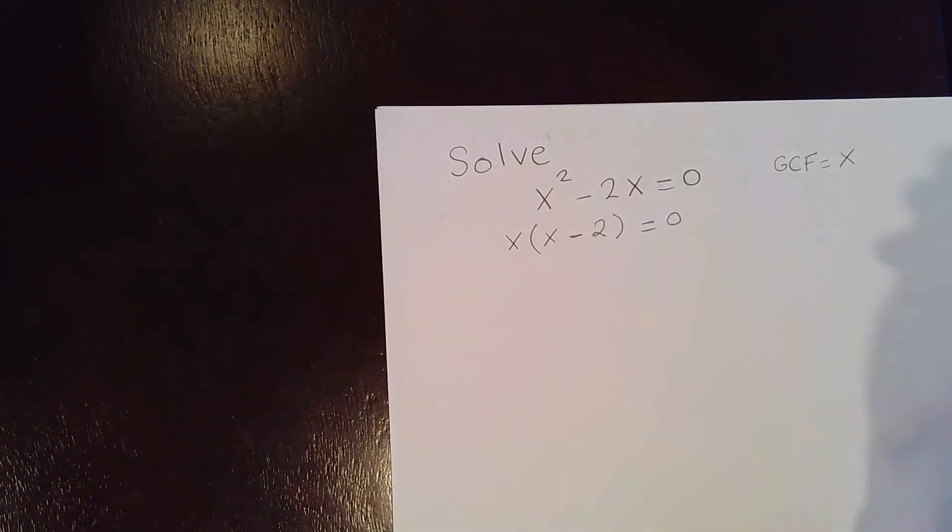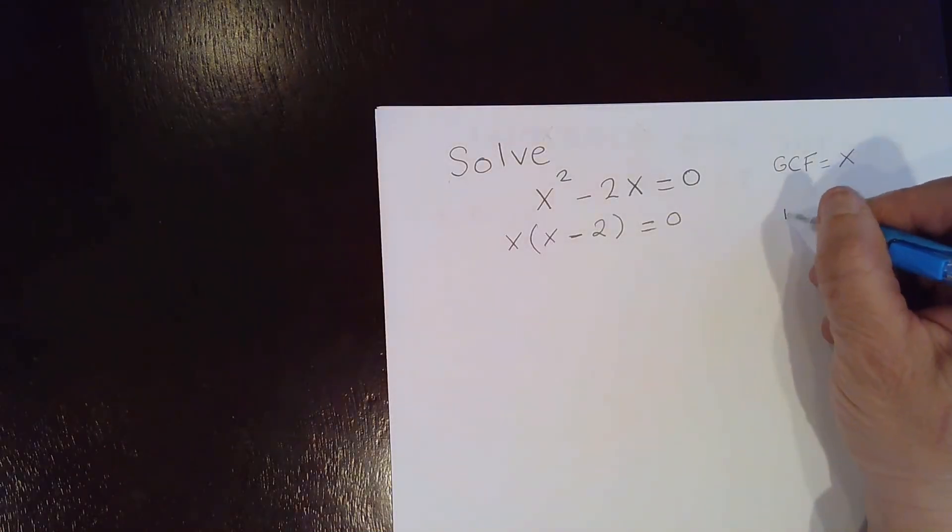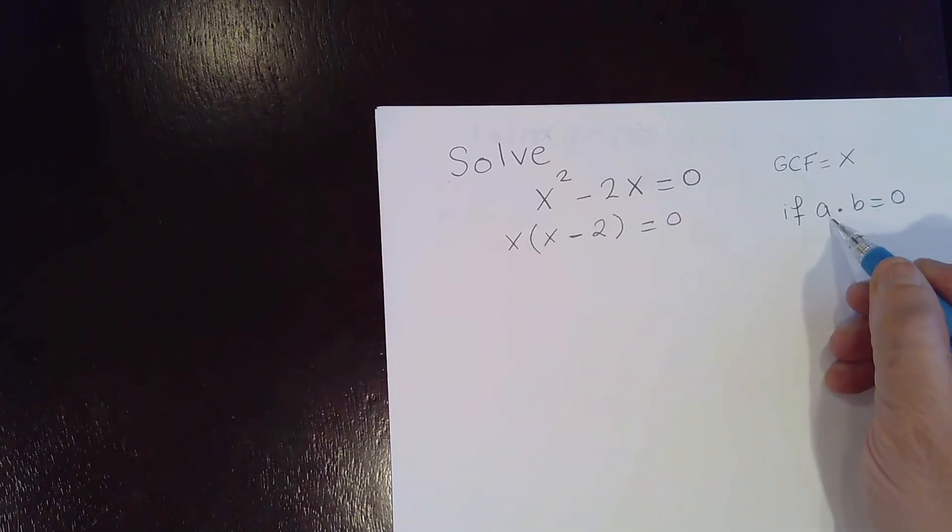Now if you recall the 0 product property, what does it say? If you have two factors that have a product 0, if a times b, two factors have a product equal to 0, then one of them must be 0.